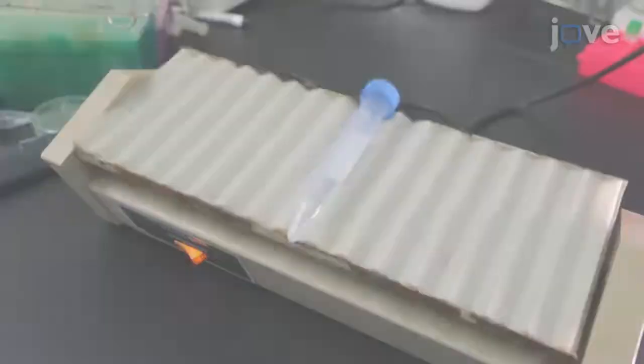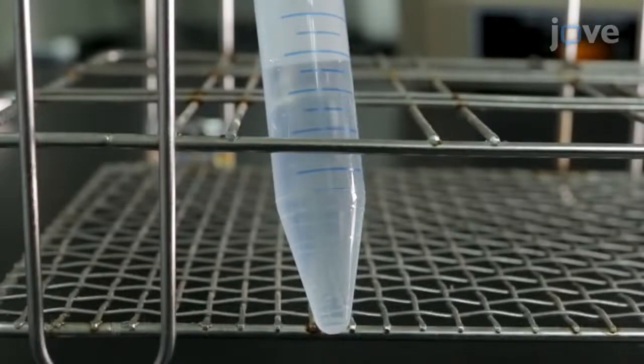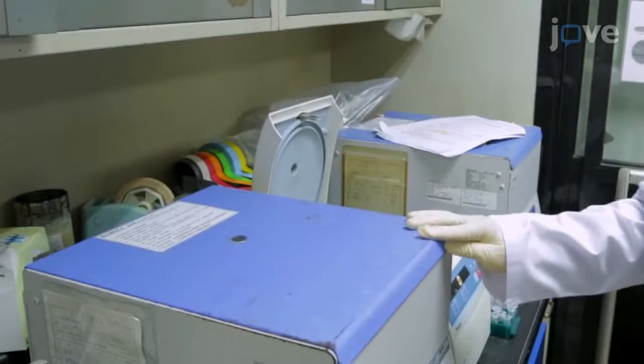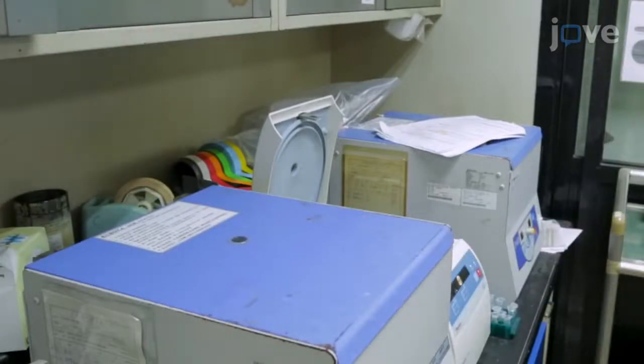After the eggs are released, add 10 mL of deionized water to stop the lysis. Then centrifuge the tube to pull down the eggs and remove as much of the supernatant as possible.